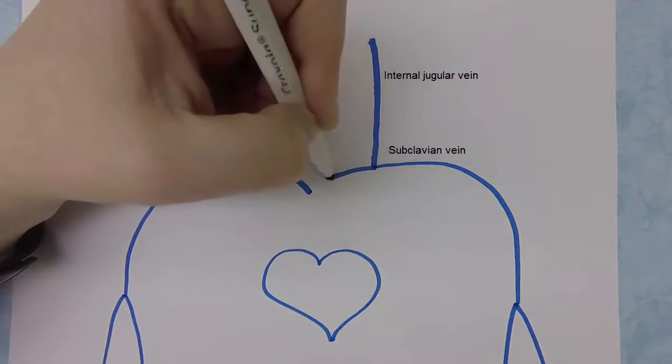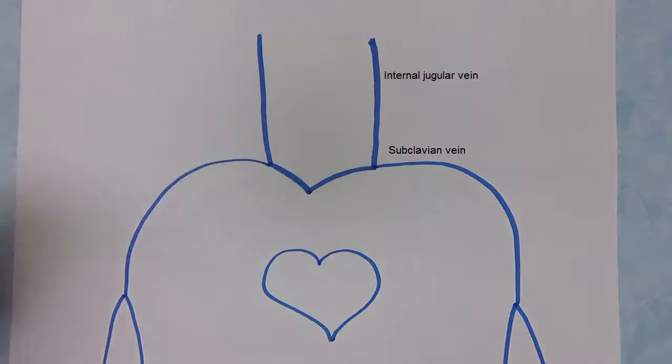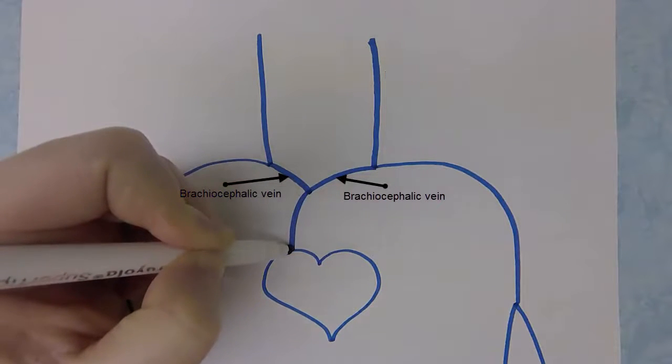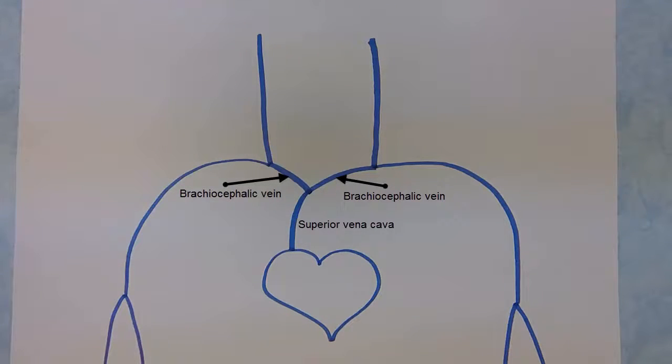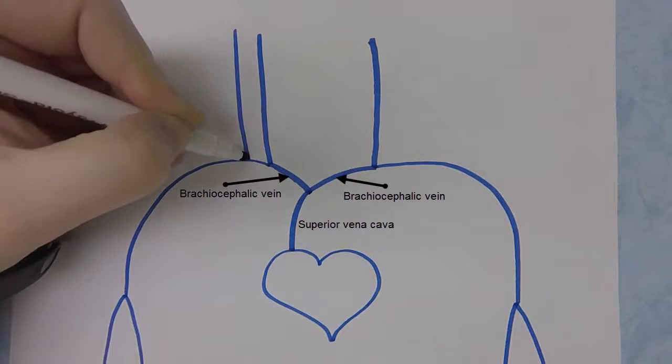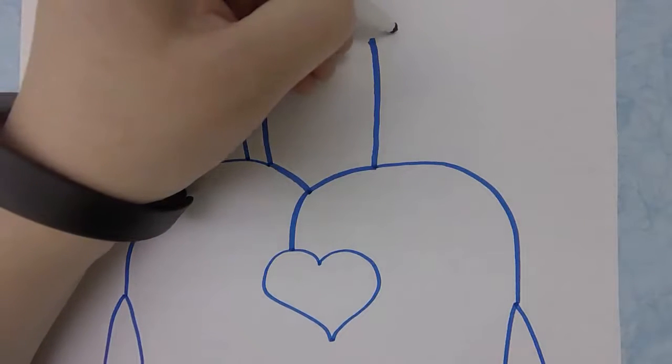When those veins join they will form right and left brachiocephalic veins. Right and left brachiocephalic veins will unite to form the superior vena cava which drains back to the right atrium.